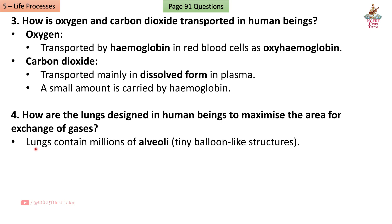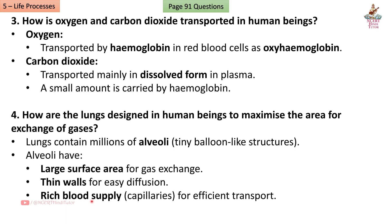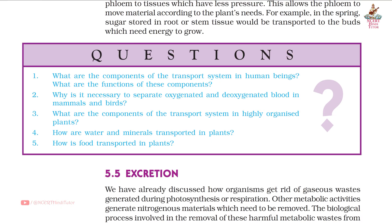Question 4: How are the lungs designed in human beings to maximize the area for exchange of gases? Answer: Lungs contain millions of alveoli — tiny balloon-like structures. Alveoli have a large surface area for gas exchange, thin walls for easy diffusion, and a rich blood supply with capillaries for efficient transport, ensuring maximum oxygen absorption and carbon dioxide removal.